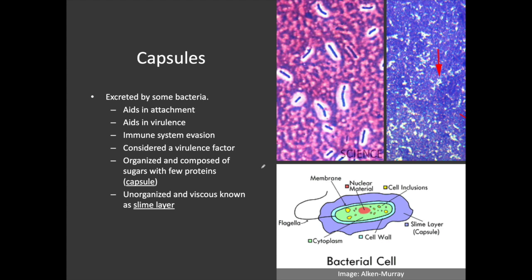Capsules are external structures that are excreted by bacteria. In biology, we have a general term for an outer coating called a glycocalyx. There are different types of glycocalyx: protein glycocalyx, sugar glycocalyx, and slime layer glycocalyx. Bacteria, for the most part, use the sugar one. This glycocalyx — this sugar coating referred to as a capsule — aids in attachment because it's a little sticky, so it allows the bacteria to attach more easily. It's considered a virulence factor and contributes to the pathogenicity or virulence of an infection simply because of this sugar coating.